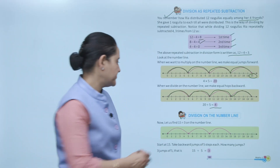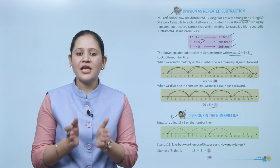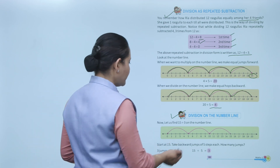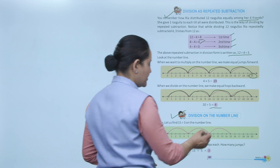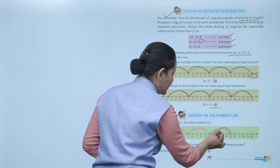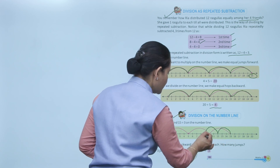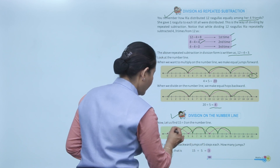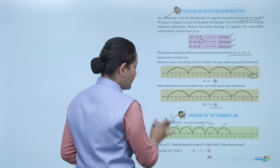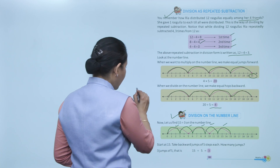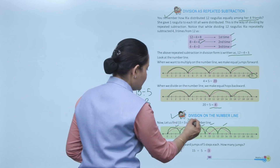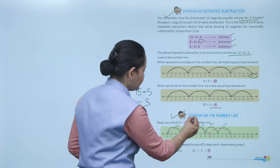Division on the number line: find 15 divided by 3. Start from 15 and jump 3 places backward each time until we reach 0 — that's 1, 2, 3, 4, 5 jumps. So 15 divided by 3 equals 5, and 15 divided by 5 equals 3.